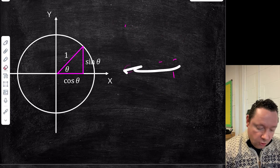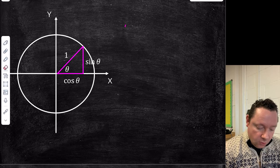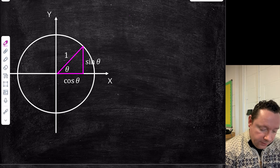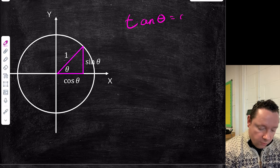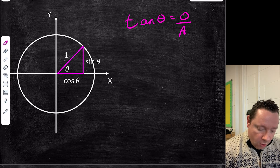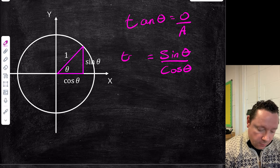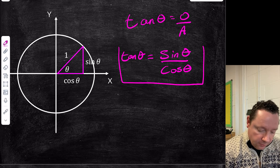We can get two trig identities quite easily. We know that tan theta equals opposite over adjacent. But opposite is sine theta and adjacent is cos theta. So we've got our first trig identity: tan theta equals sine theta over cos theta.